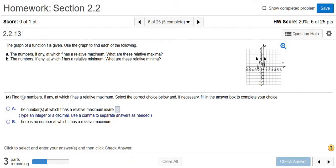In this problem, part A wants us to find the numbers, if any, at which f has a relative maximum. And then it says, what are these relative maxima? So we have to find the numbers where there is a maximum, and then we have to find out what the maximum actually are.